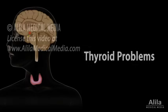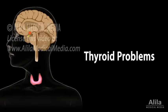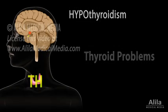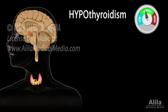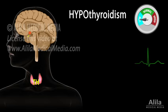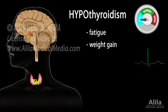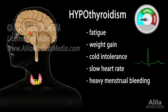There are two major groups of thyroid problems. Hypothyroidism occurs when the thyroid does not produce enough hormones, resulting in a low metabolic rate combined with slow respiratory and cardiovascular activities. Common symptoms include fatigue, weight gain despite poor appetite, cold intolerance, slow heart rate, heavy menstrual bleeding, and constipation.